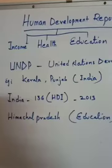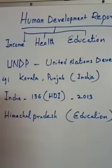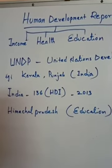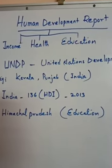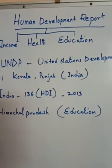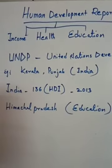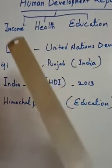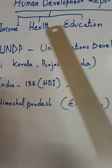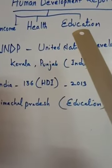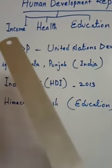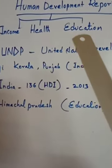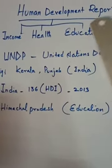Finally, if you take any information like the Human Development Report, you should follow income, health, and education. Then you will get a perfect result.